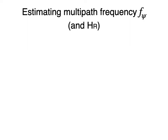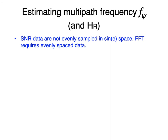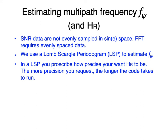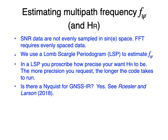To summarize: to estimate the multipath frequency and reflector height H_R, keep in mind that SNR data are not evenly sampled in sine-of-elevation space. FFTs require evenly spaced data, which is why we use what's called a Lomb-Scargle periodogram to estimate multipath frequency and reflector height — it allows any spacing. You can specify precision, but more precision means longer computation time and you're likely pushing beyond the technique's real capability. There is a Nyquist for GNSS IR: certain GPS sampling rates won't work for certain setups — a very tall antenna with 30-second data will not yield the correct frequency.